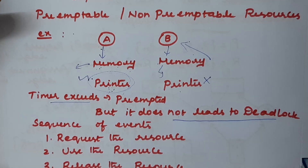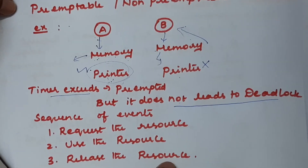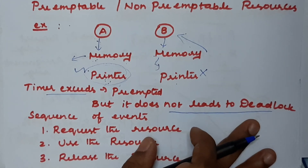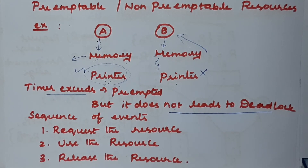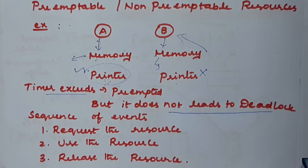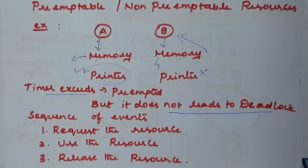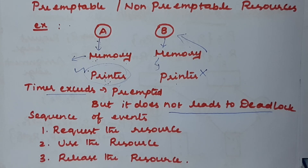Finally, there is a sequence of events that must be followed whenever a resource is allocated to a process: first, the process requests the resource; second, it uses the resource; and third, it releases the resource. Each process must follow these sequential events. If it does not follow this sequence, it will lead to deadlock. This concludes the introduction to deadlock and how resources are used by processes.